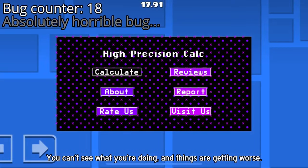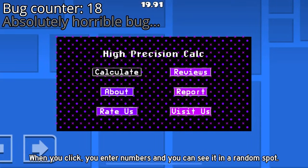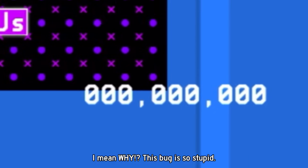You can't see what you're doing, and things are getting worse. When you click, you enter numbers, and you can see it in a random spot. I mean why? This bug is so stupid.